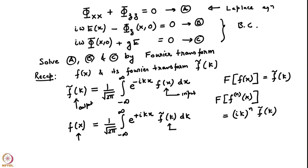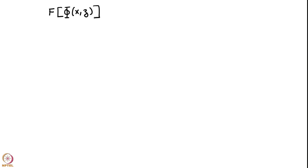Here we are interested in the Fourier transform with respect to the x variable — we are not transforming with respect to z. So we define the Fourier transform with respect to x. Capital Φ is a function of x and z, but I am Fourier transforming with respect to x. So the x variable goes over to the k variable, and this becomes some function Φ̃(k,z) — the x is replaced by k and z remains z. This is the Fourier transform version of Φ.